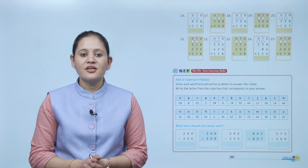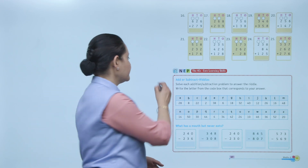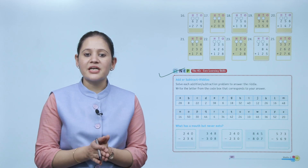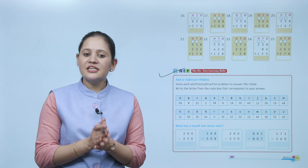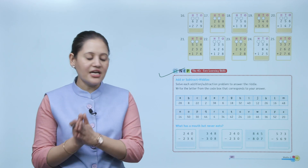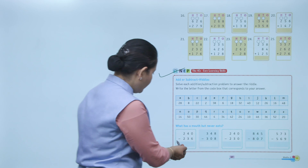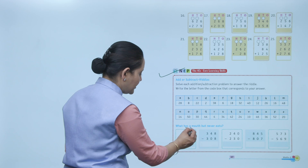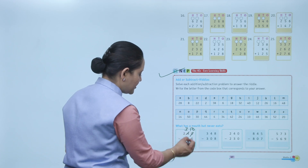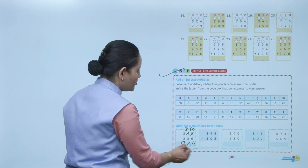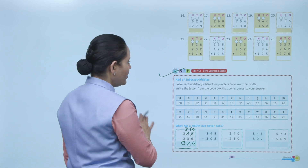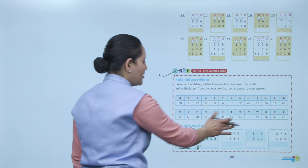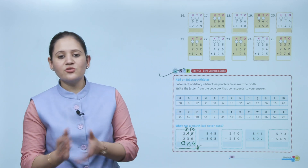Next is the 4C core learning skills — add or subtract riddle. Solve each addition and subtraction problem to answer the riddle. Write the letter from the code box that corresponds to your answer. For example, subtracting: 0 minus 6 requires borrowing, giving 10 minus 6=4, and 3 minus 3=0, so the answer is 4, and from the code box the letter R is written.